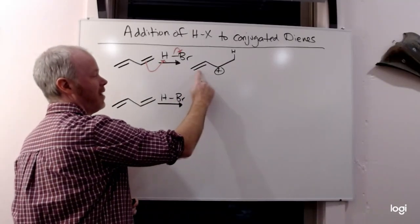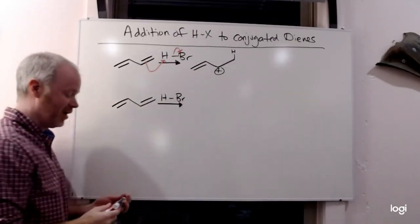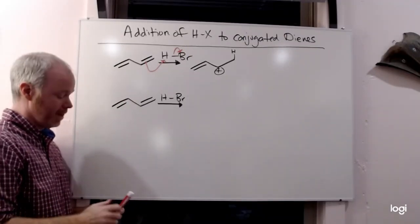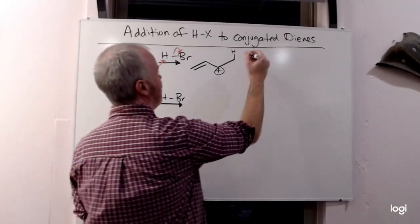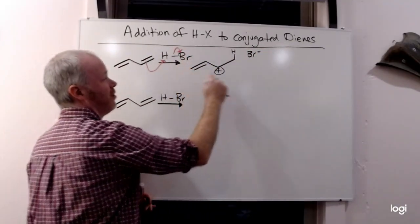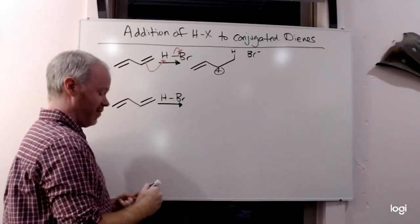It also has resonance stabilization here making it more stable. That's going to be even more important in a minute. And then we have bromine left over as Br minus because the electrons flow to the bromine. So that's our nucleophile for the second step.